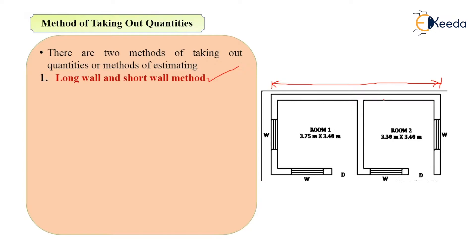For example, if you are taking vertical walls or walls in the Y direction as long walls, then it is necessary that you take horizontal walls or walls in the X direction as short walls. In this plan, room 1 is 3.75 meters and room 2 is 3.30 meters, making approximately 7-point-something meters for the longest wall in the horizontal direction. So there will be two long walls and three short walls of 3.4 meters in the vertical direction.